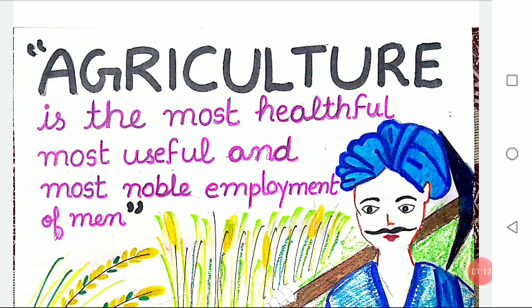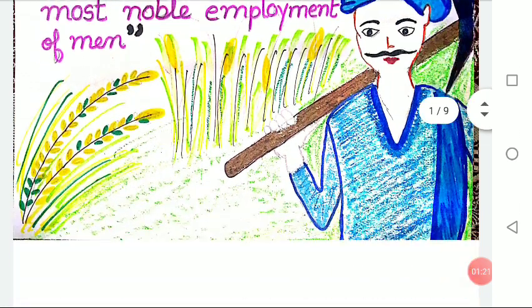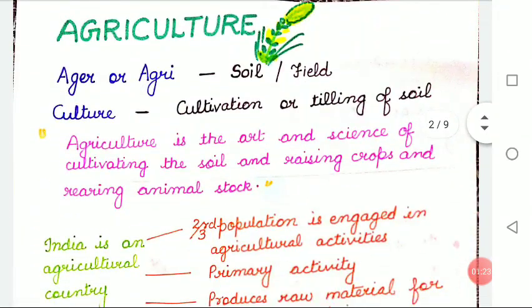The beginning of settled life and dawn of human civilization owe their origin to agriculture. It is the most fundamental form of human activity and includes not only growing of crops but also domestication of animals. The word agriculture is derived from the Latin word 'agar' or 'agri' meaning soil or field, and 'culture' meaning cultivation or tilling of land. So agriculture can be defined as the art and science of cultivating the soil and raising crops and rearing animal stock.